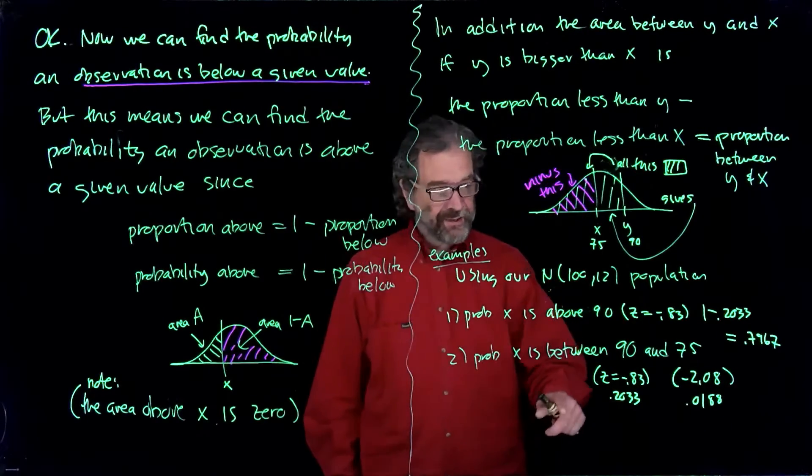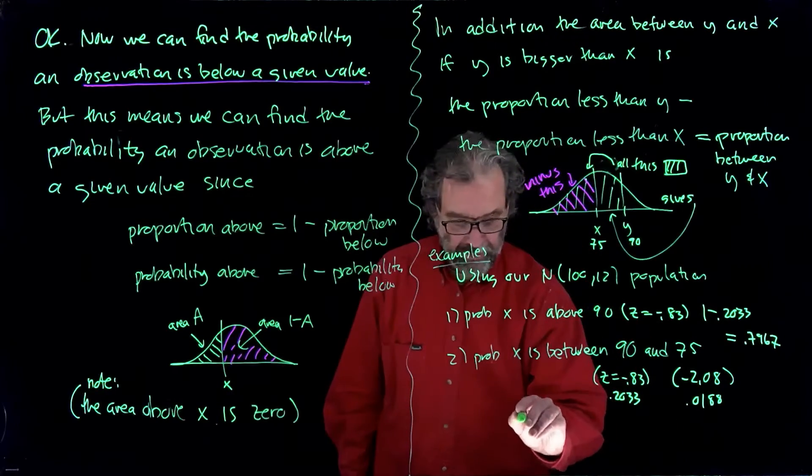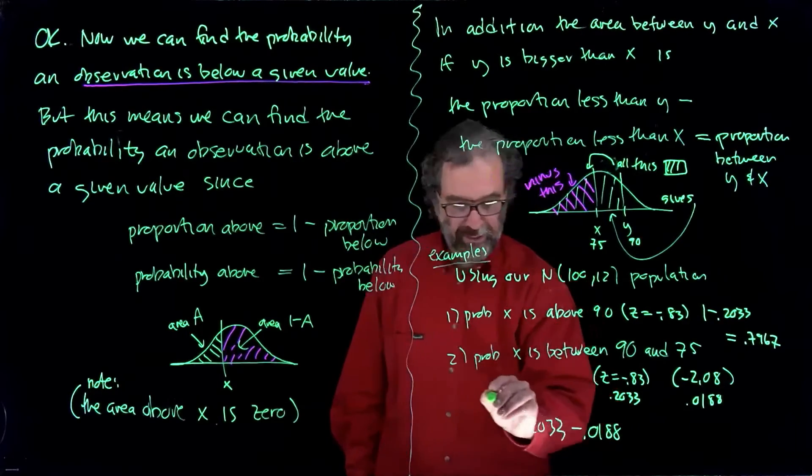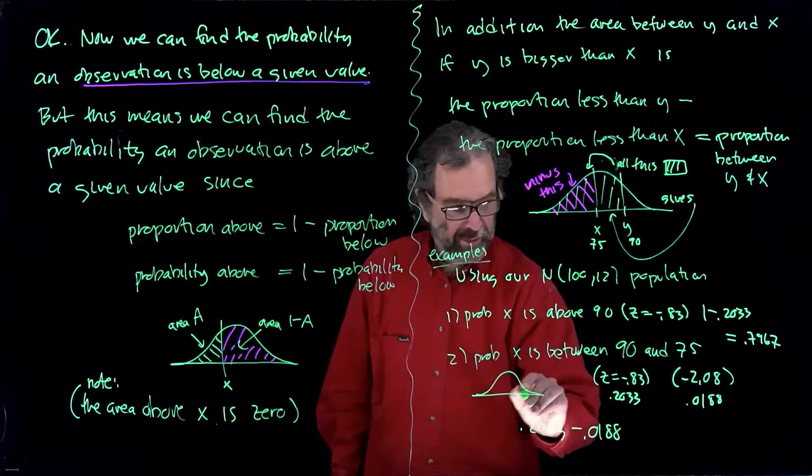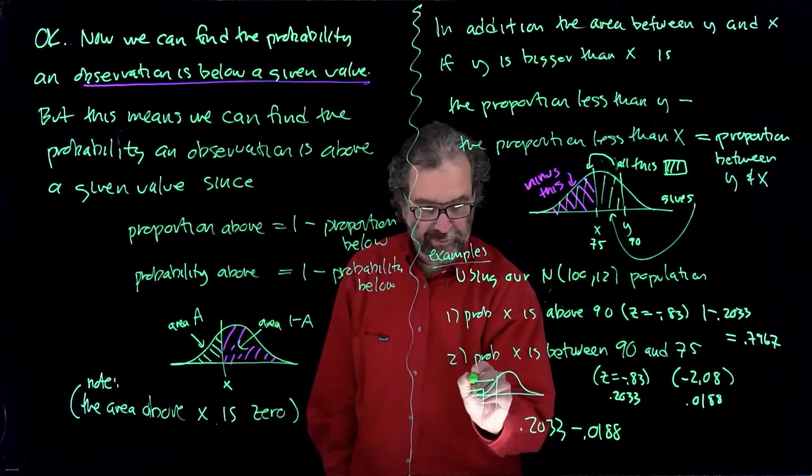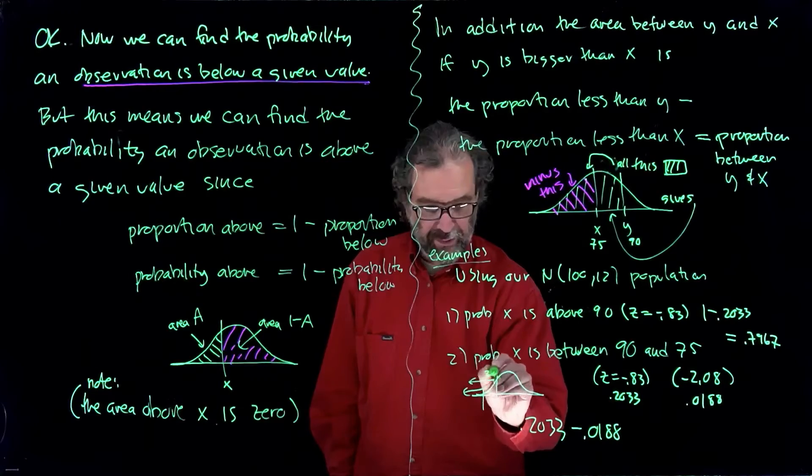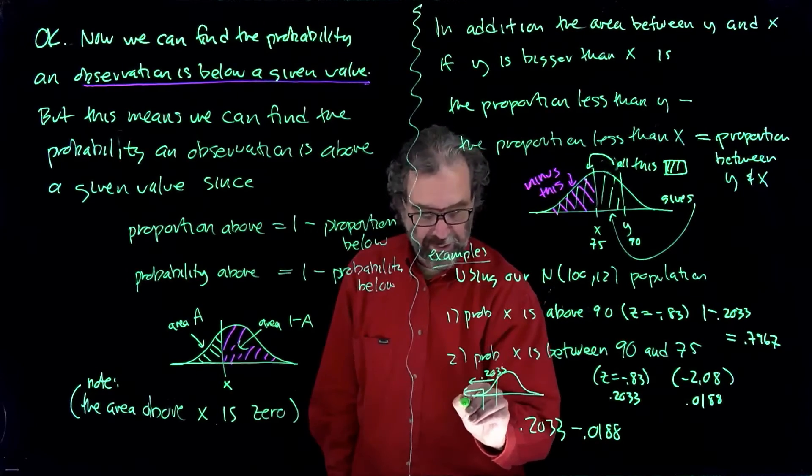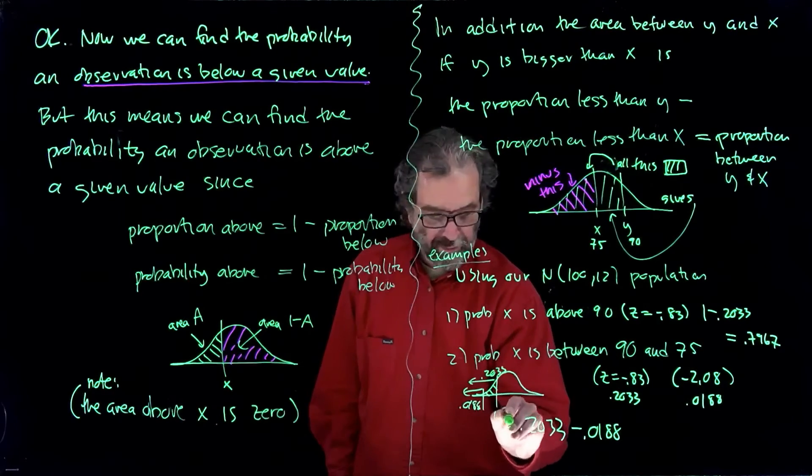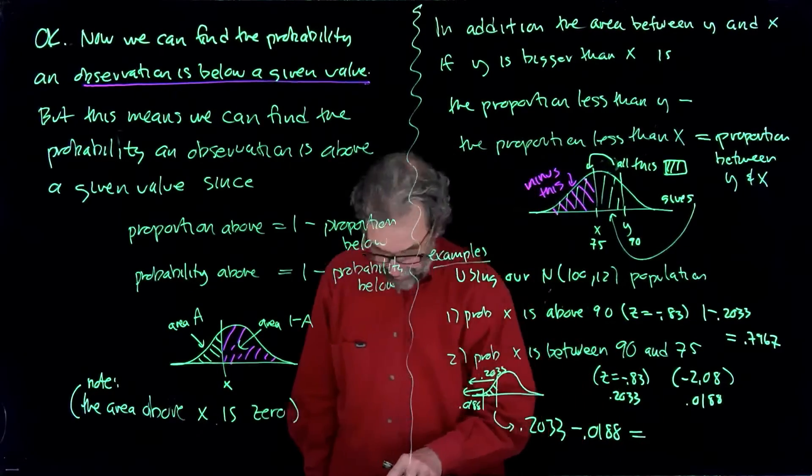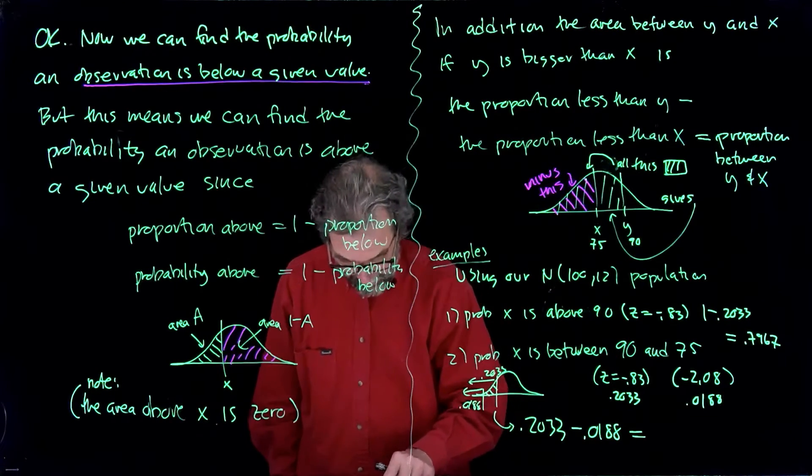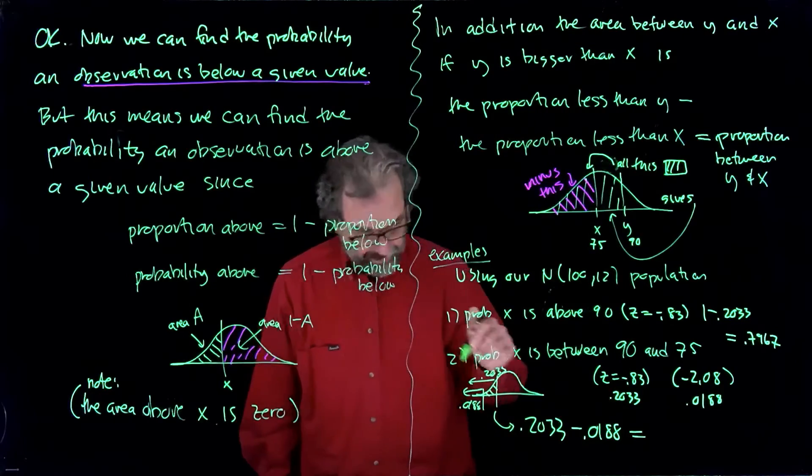And then what it says is you take the big area, subtract off the small area. So we take .2033 and subtract off .0188. We're over here in one case and here in the other case. We find these areas left. This area is .2033, this is .0188. And so what's in between will be this quantity. So we take .2033 and subtract off .0188, which equals .1845.